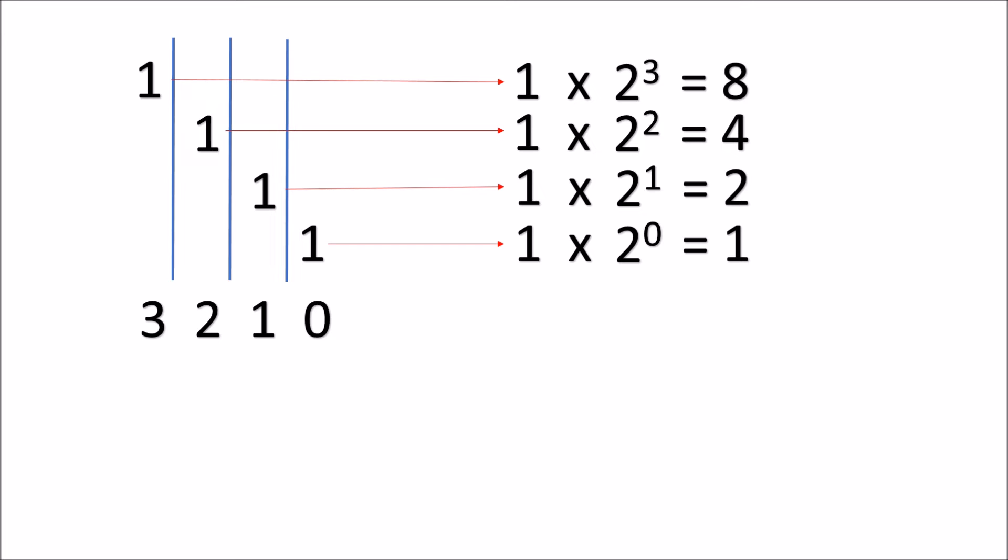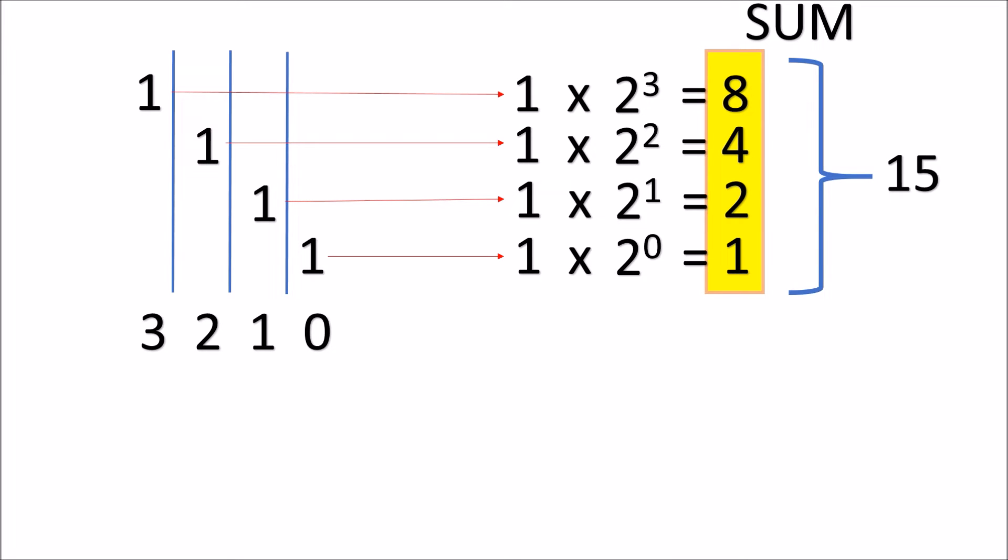So 1 x 2 to the zeroth power is 1. 1 x 2 to the first power is 2. 1 x 2 square is 4. 1 x 2 cube is 8. Now sum up all the values, we get 15. So the answer is 15.